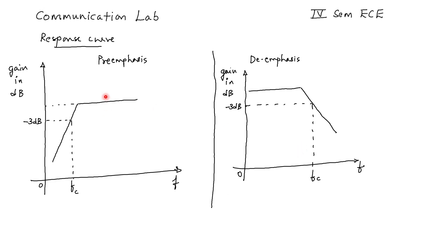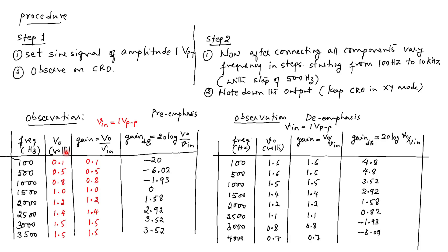This is the response curve of pre-emphasis and de-emphasis. To obtain the cutoff frequency, we consider minus 3 dB from the maximum value. This is the procedure and observation when the experiment is conducted.